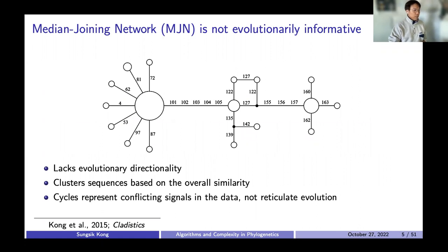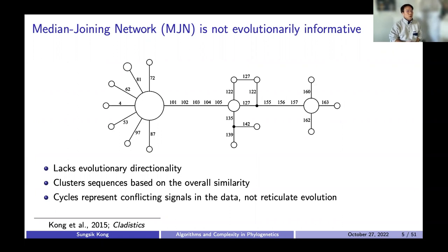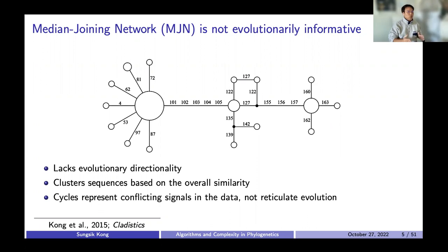For the first half of my thesis, where the paper has been published in Cladistics in 2015, I argued that the median joining network is not evolutionarily informative. An example of a median joining network is shown here. The hollow circles represent haplotypes or sequences, and the larger the circle, the larger the number of haplotypes it contains. The black dots represent median vectors created by the algorithm that can be interpreted as unsampled or extinct haplotypes. The edges connecting two nodes have a number beside them indicating the nucleotide position in an alignment where differences between two haplotypes were observed.